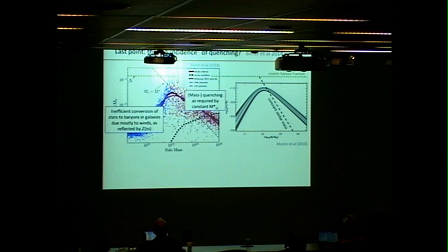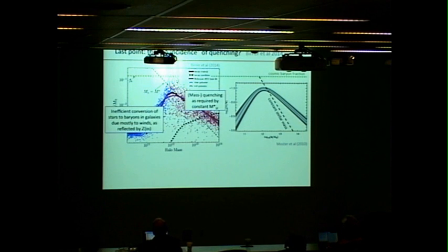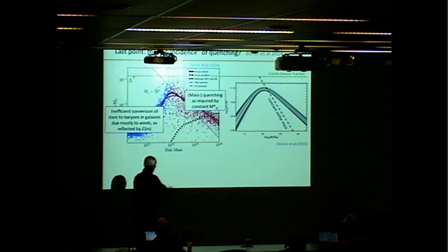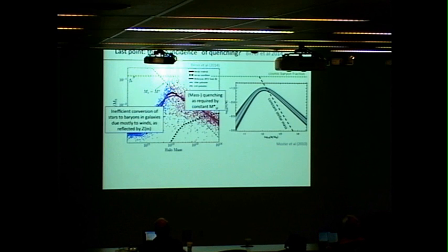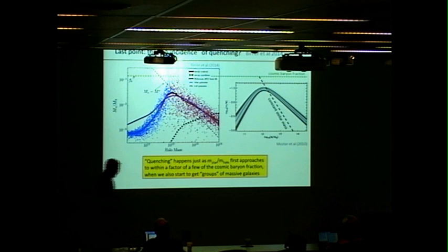The other interesting point is that this mass scale is also related to when galaxies find themselves in groups. That summarizes some of the top-level perspectives on quenching which come from looking at the galaxy population, how it changes with time, and applying continuity equations.